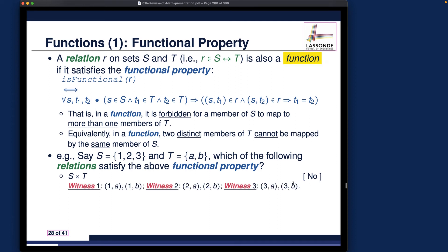A witness: we need ordered pairs in S × T where the same domain value maps to different range values. For example, (1, a) and (1, b) are both members of S × T. Here the same domain value 1 maps to t1 = a and t2 = b. According to the functional property, t1 must equal t2, but a ≠ b — that's a violation.